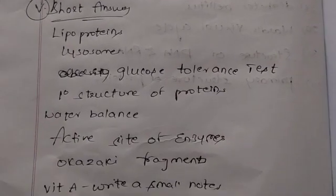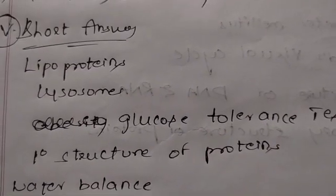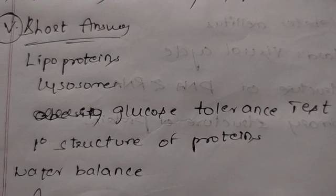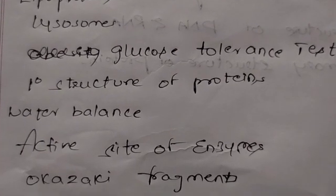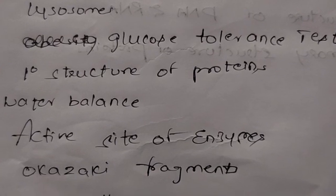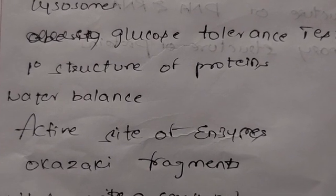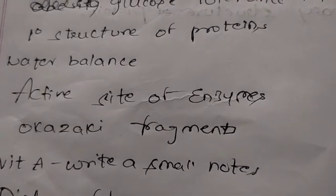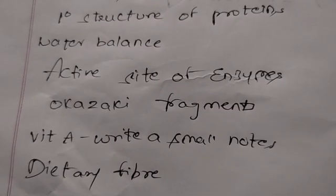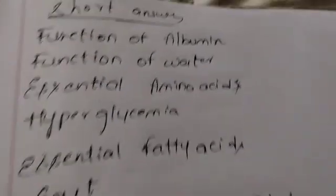Glucose is very important, and primary structure of proteins. Water balance - very short but important. Next, active site of enzymes. Okazaki fragments - very important. Phenylketonuria - very important.